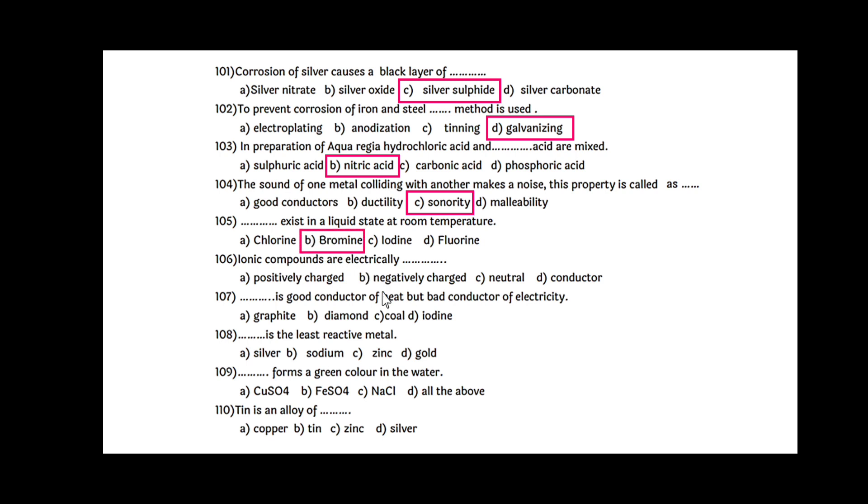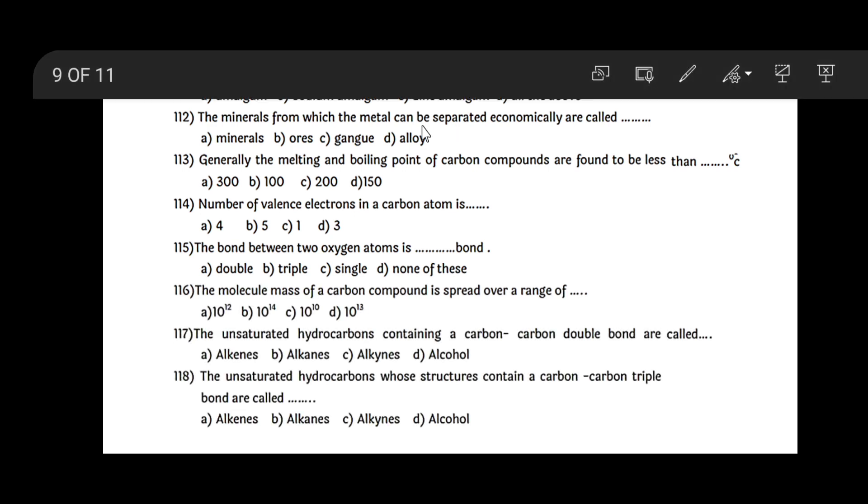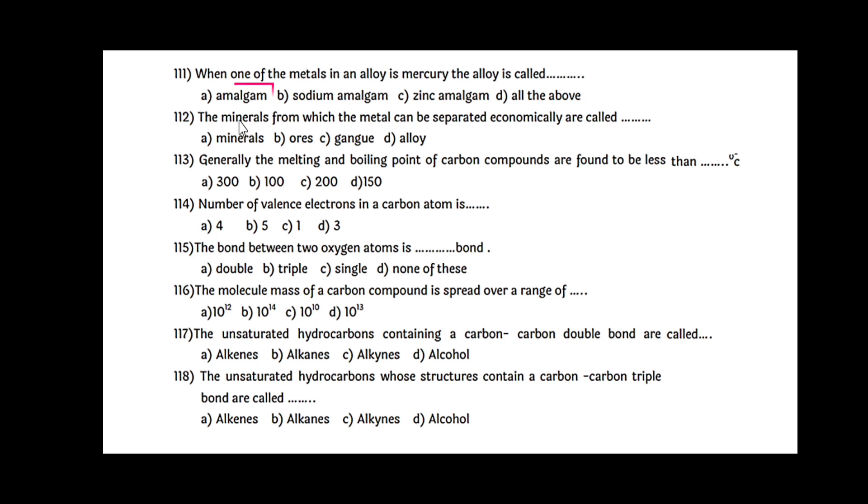The sound of one metal colliding with another makes a noise. This property is called sonority. Bromine exists in liquid state at room temperature. Ionic compounds are electrically neutral. Diamond is a good conductor of heat but bad conductor of electricity. Gold is the least reactive metal. FeSO4 forms a green color in water. Tin is an alloy of copper.